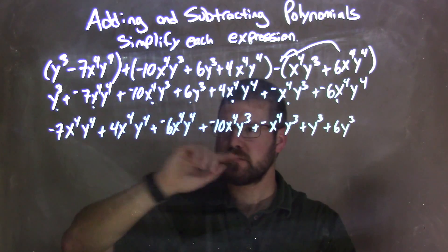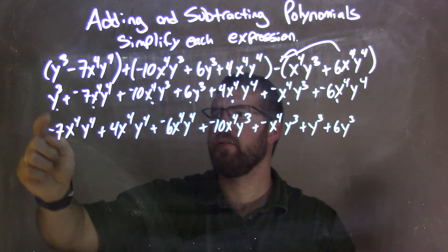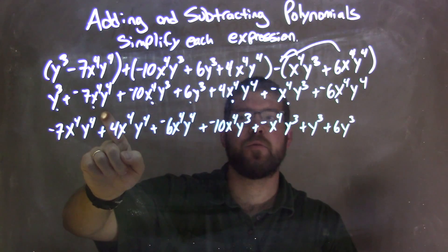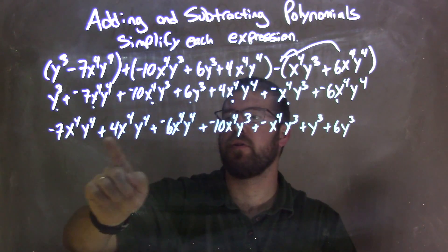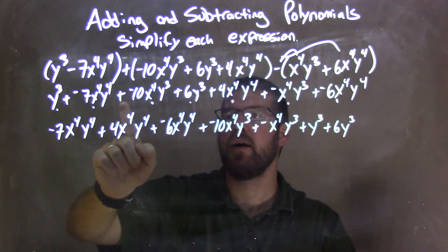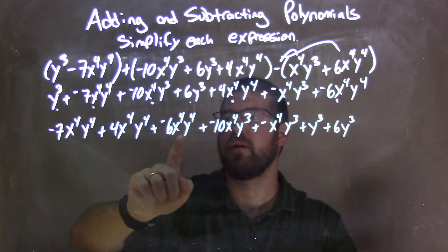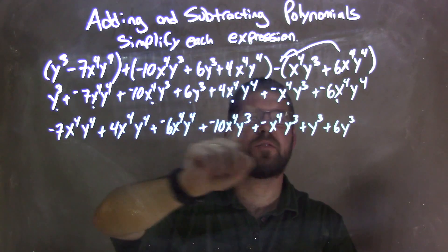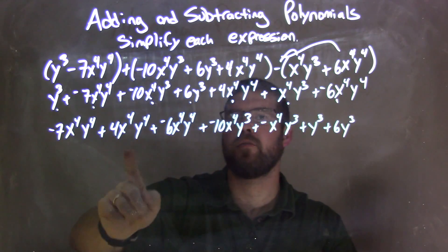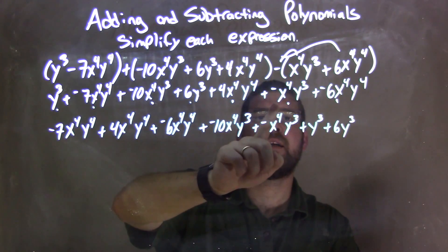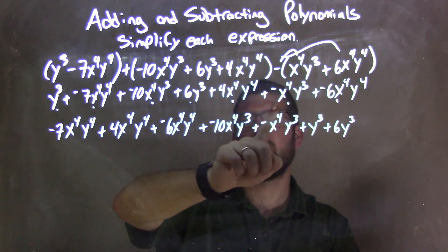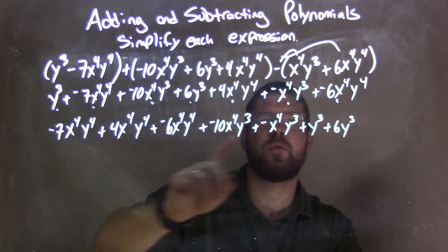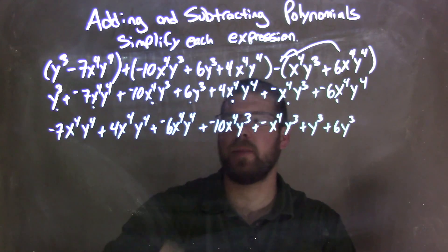Let's go double check that we brought everything down. Y to the third is right there. Negative 7x to the fourth y to the fourth is right there. Negative 10x to the fourth y to the third is right there. 6y to the third is right there. 4x to the fourth y to the fourth is right there. Negative x to the fourth y to the third is right there. And negative 6x to the fourth y to the fourth is right there.